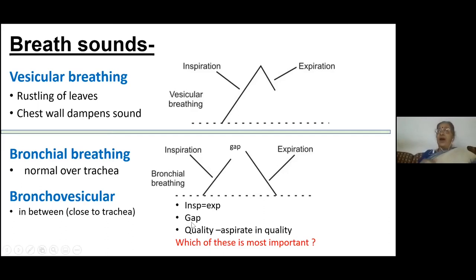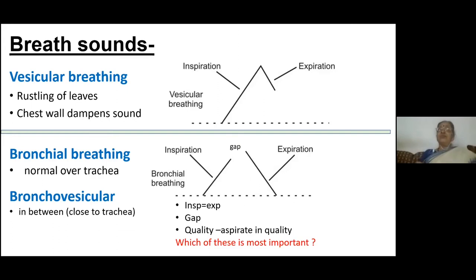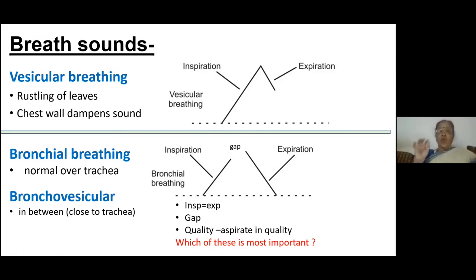The gap — I can produce a gap voluntarily. I can inspire, hold, give the gap, and expire. So patients, when you give them instructions, may not understand, and sometimes they may breathe with a gap and then expire. So again, the gap can be voluntary. What cannot be changed by the patient is the quality of the breathing. It's impossible to describe the quality fully — the best way to describe it is 'aspirate in quality,' as if you are aspirating the air.